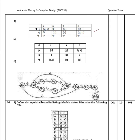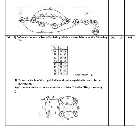For epsilon-NFA, they may give the diagram or a transition table. If a transition table is given, solve it the same way. The presence of epsilon transitions identifies it as an epsilon-NFA. Problems may be given as a transition table or as a graph diagram.